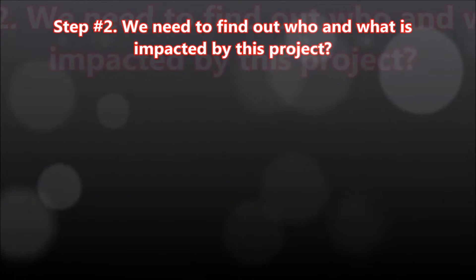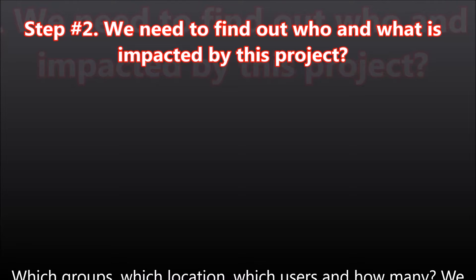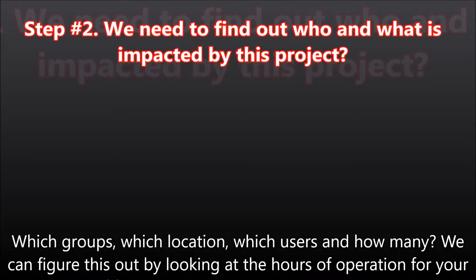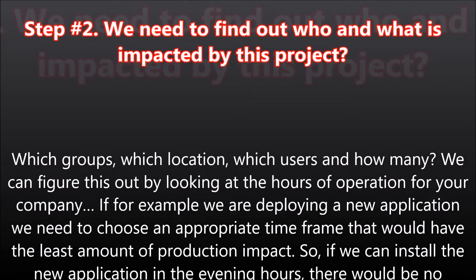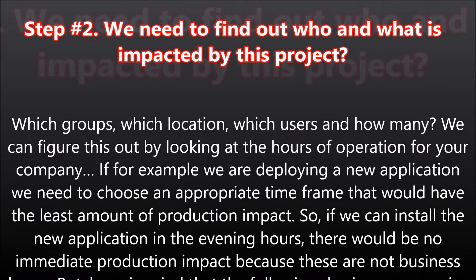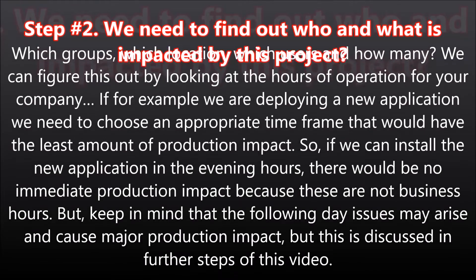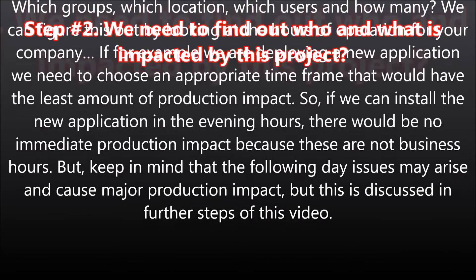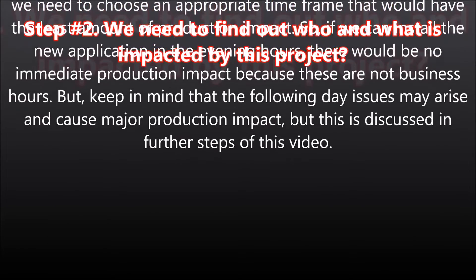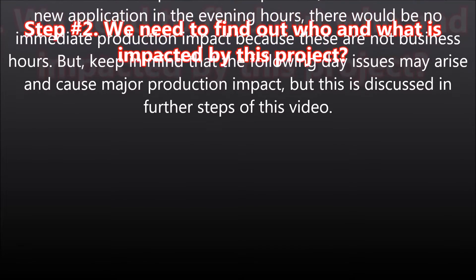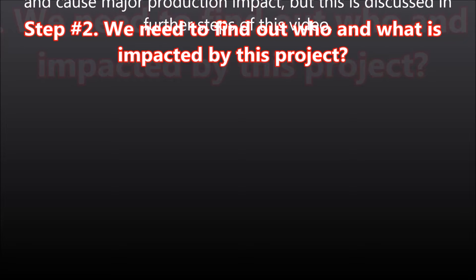Step number two: we need to find out who and what is impacted by this project. Which groups? Which location? Which users and how many? We can figure this out by looking at the hours of operation for your company. If, for example, we are deploying a new application, we need to choose an appropriate time frame that would have the least amount of production impact. Installing in the evening hours means no immediate production impact, since these are not business hours. Keep in mind that the following day, issues may arise and cause major production impact, but this is discussed in further steps.